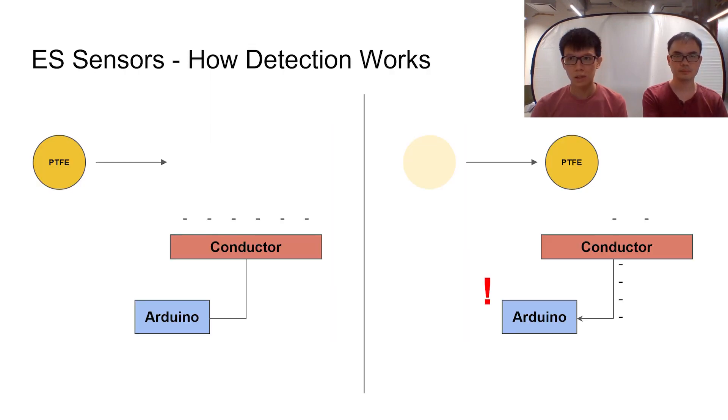When there is relative motion between a dielectric material and a conductor without contact, the free electric chargers within the conductor are disturbed, inducing current within the conductor, which can be detected and processed by a microcontroller. The induced current changes with distance and speed between the two materials.